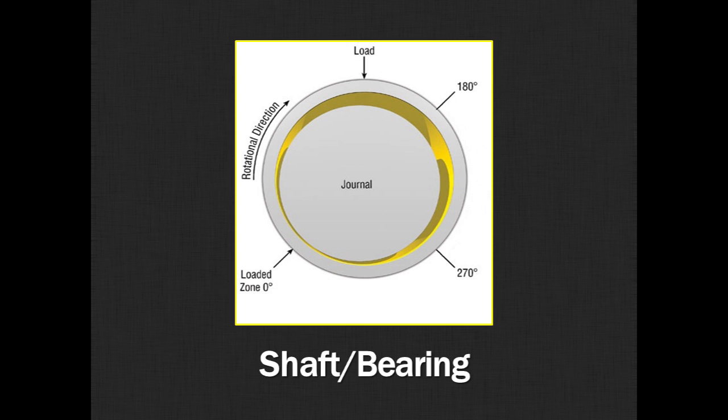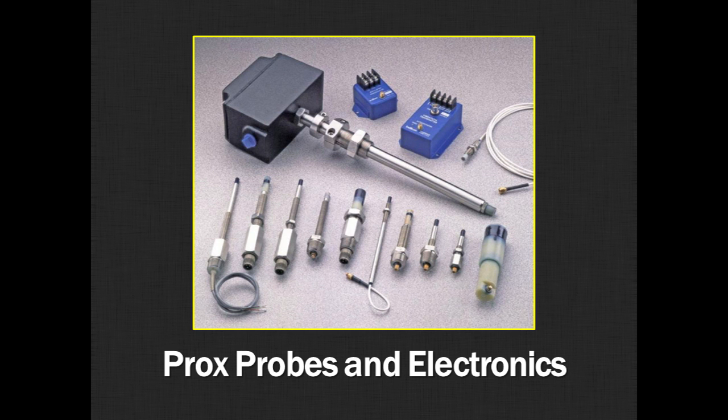So we use eddy current proximity probes for doing contactless measurement in these kinds of applications. So they can measure very small distances with no contact, no moving parts. They work in harsh and dirty environments and they basically do the job and run forever. We're talking about making very small measurements here, measurements that are typically less than a tenth of an inch and in many cases it's down to the thousandth of an inch.